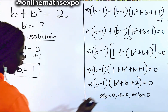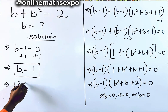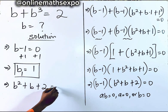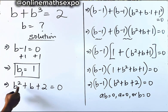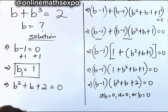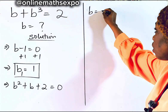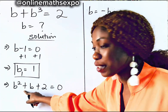Now we use the second factor: b² + b + 2 = 0. The highest power of b is two, so this is a quadratic equation. We will solve it using the quadratic formula.